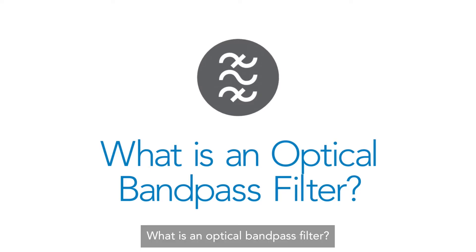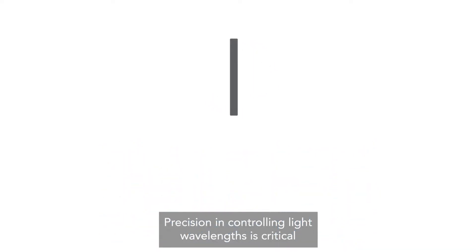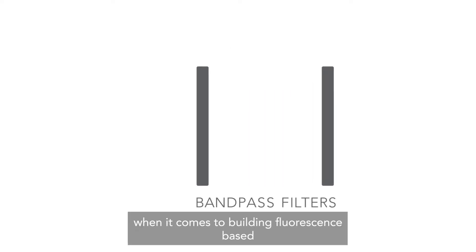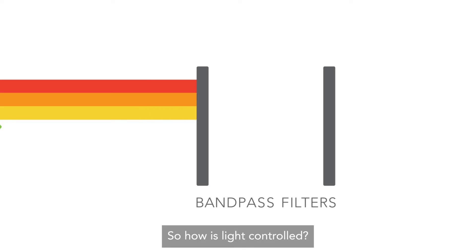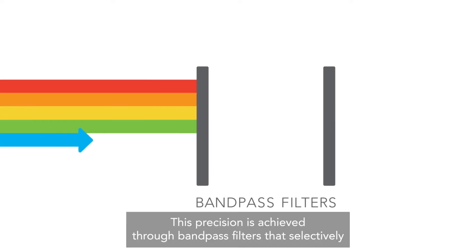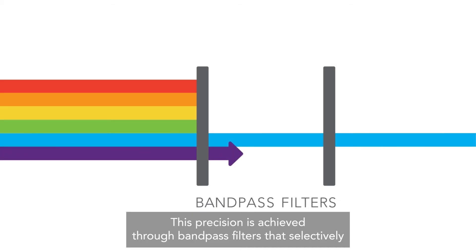What is an optical bandpass filter? Precision in controlling light wavelengths is critical when it comes to building fluorescence-based state-of-the-art biotech, such as DNA sequencing. So how is light controlled? This precision is achieved through bandpass filters that selectively allow specific wavelengths to pass through while blocking all others.